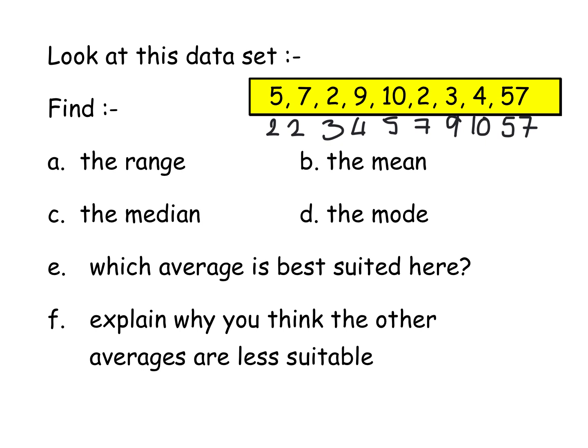Range was the highest takeaway lowest. So that was 57, take away 2, which was 55. The mean is when we add them all up and divide by how many numbers we've got, which gives us 99 divided by 9 numbers. So the mean is 11. The median is the middle number. 9 numbers on the list, I've got 4 on one side, 4 on the other. My middle number is 5. And the mode is the most common number, which is 2.